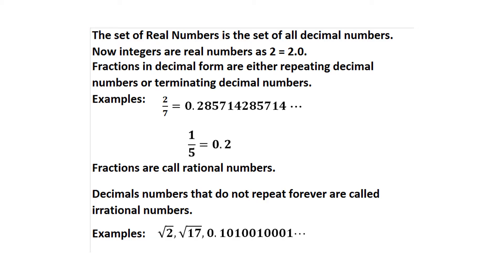The set of real numbers is the set of all decimal numbers. Integers are real numbers: 2 = 2.0, −4 = −4.0, etc. Fractions in decimal form are either repeating or terminating: for example, 2/7 ≈ 0.285714 repeating, and 1/5 = 0.2. Fractions are called rational numbers. Decimal numbers that do not repeat forever are called irrational numbers.